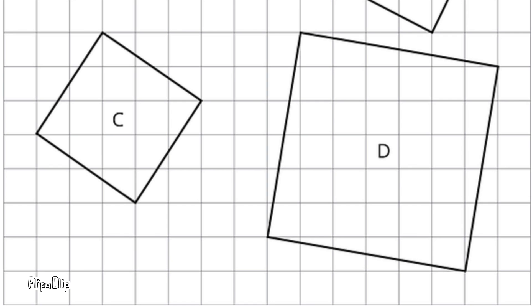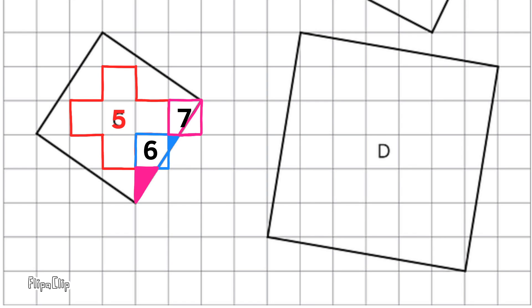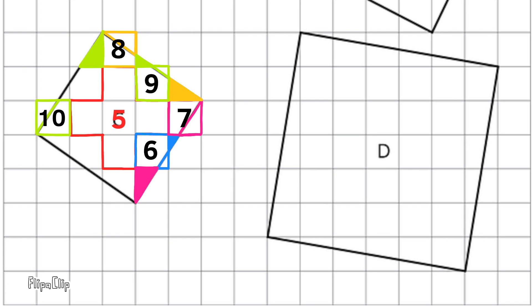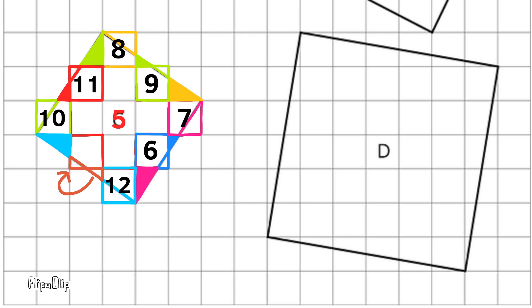To find the area in square units for squares C and D, I'll use the same strategy of decomposing and composing. Here you can see that the surface area for square C is 13 square units.